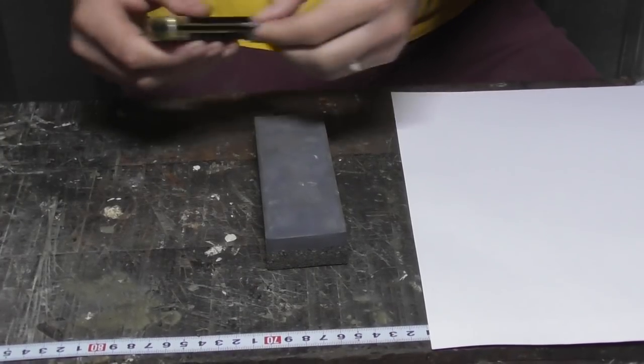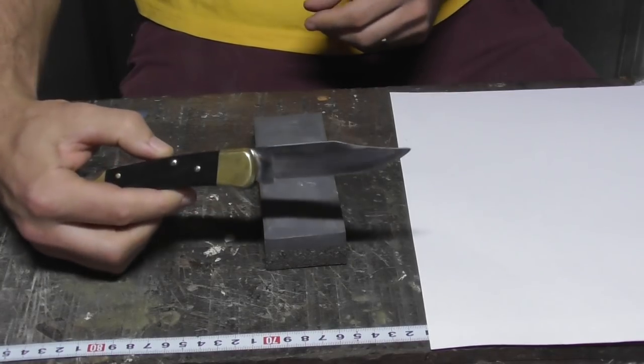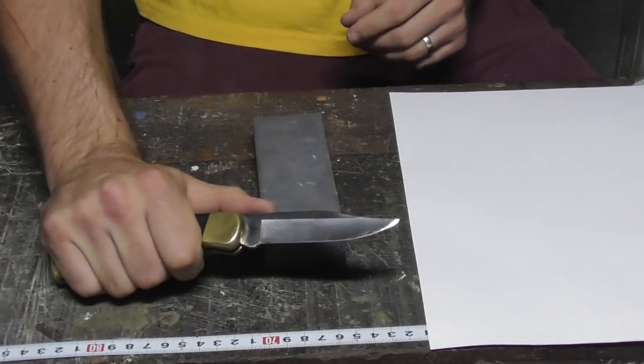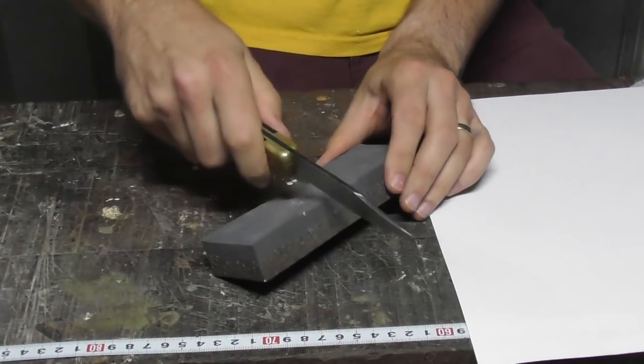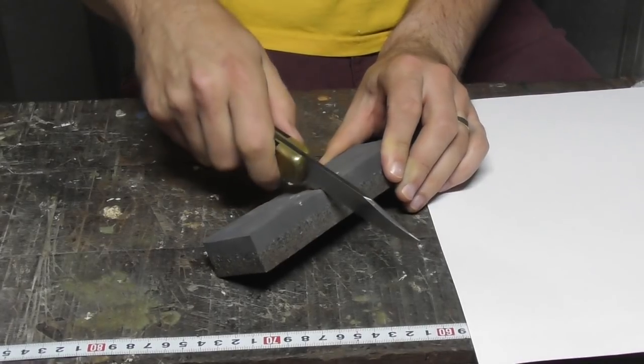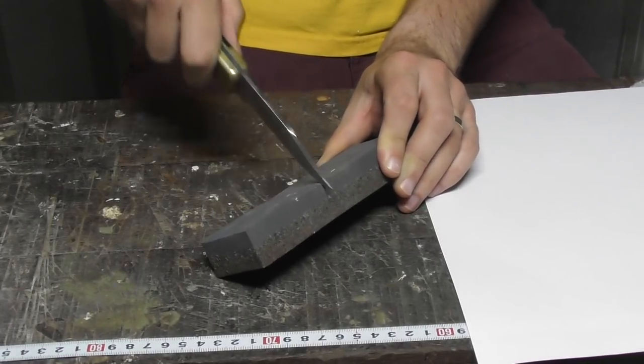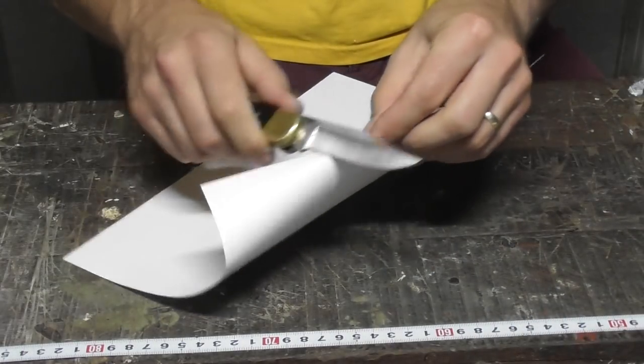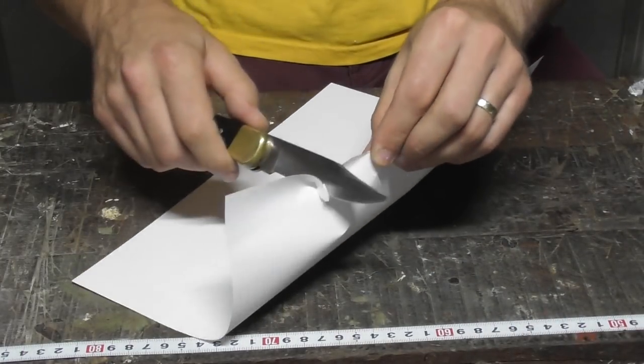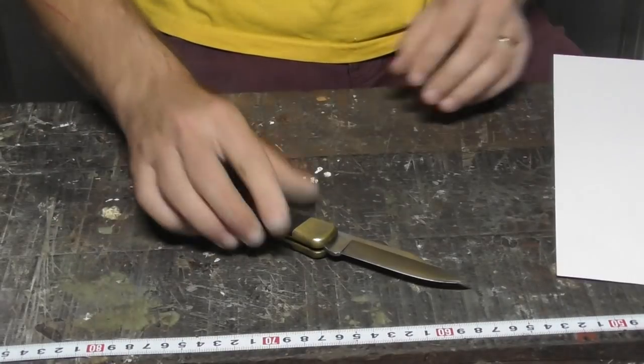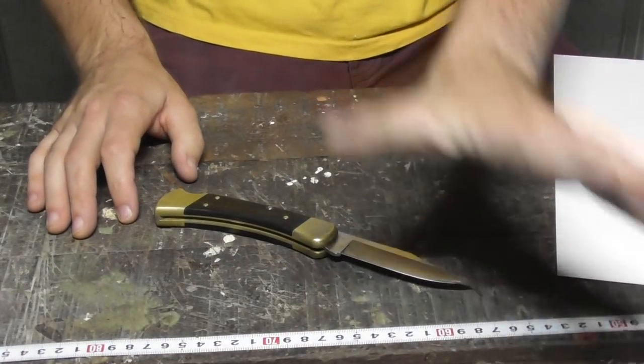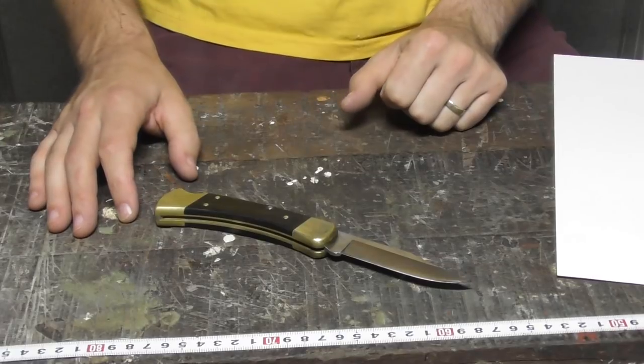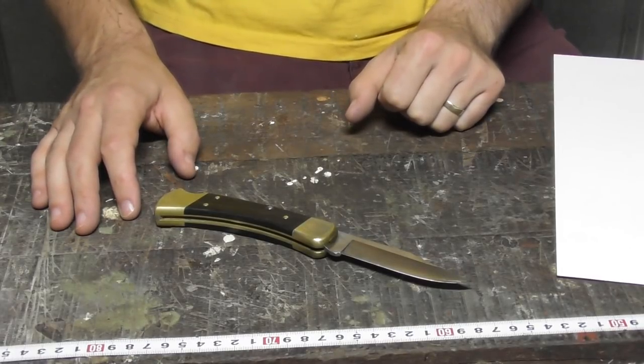So what I'm going to do with all of these is get this Buck 110. This is 58 Rockwell 420HC steel. I'm going to remove the edge on it using this stone here. Three passes will make it a relatively inert edge that will struggle to cut through paper. So I'm going to do that and restore it with every single one of these sharpeners and give you my thoughts. So it should be a cool video, let's get into it.